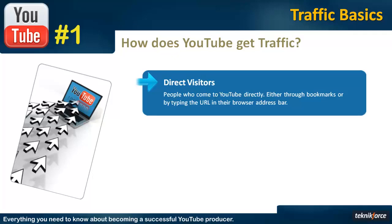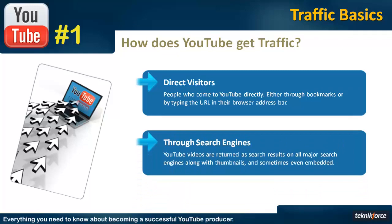The second most important source is search engines. All of them, including Google and Bing and many others, index YouTube videos and return them as part of their search results. YouTube videos are actually given a special category — whenever a video is returned in the search results, a thumbnail may also appear next to it. This means people will be drawn to it and will want to click on it more often than a regular search result because of the thumbnail. In some search engines like Bing, videos are actually embedded so they can be played right from within the search engine, making them even more clickable. So search engines are a very important source of organic traffic for YouTube.